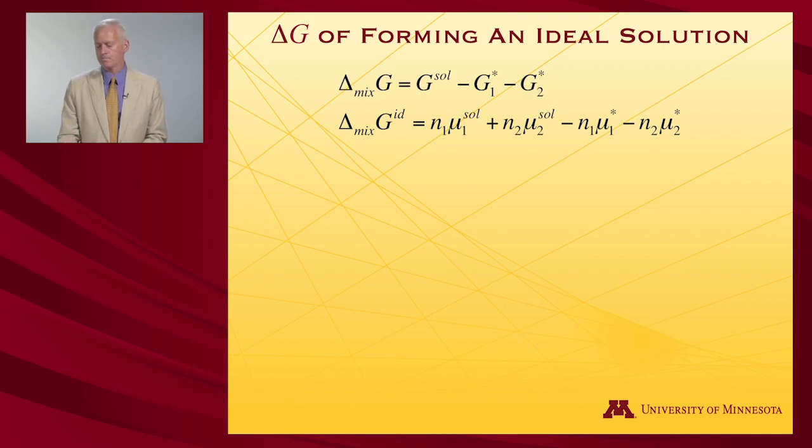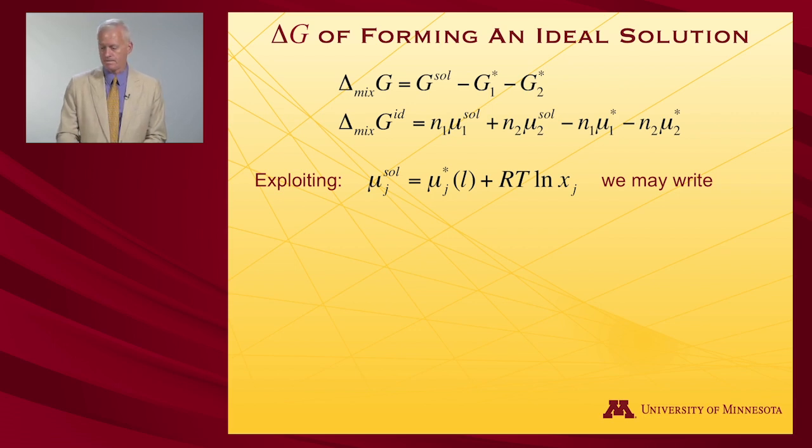So in an ideal solution, we will have the mixing of the chemical potentials, because it's a mixture, minus the chemical potentials of the pure substances. If we exploit our expressions for the chemical potential of the solution, which is the pure substance plus RT log mole fraction, we see that when I plug this in, I'm going to get n1 times mu1 star and it's going to cancel out this n1 times mu1 star. Similarly, when I use two for a subscript, I'm going to cancel out that term. All I'll be left with is these RT log mole fraction terms multiplied by their respective number of moles.